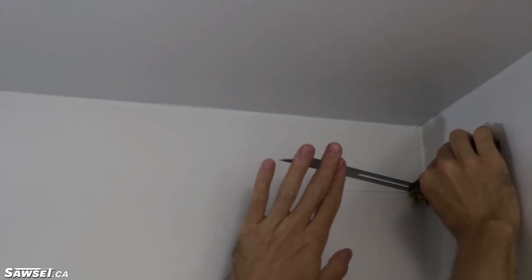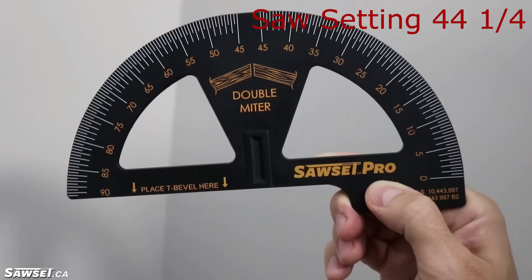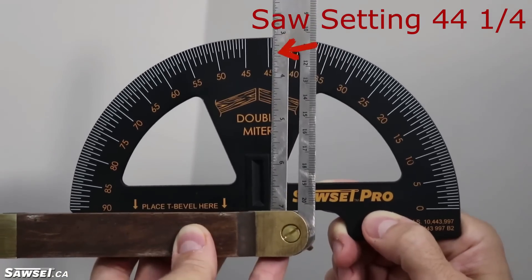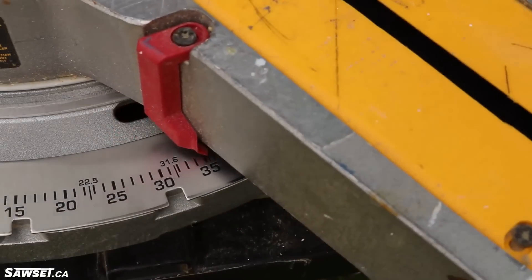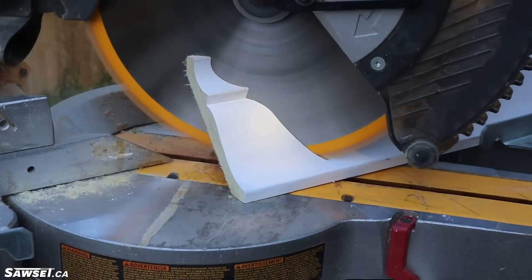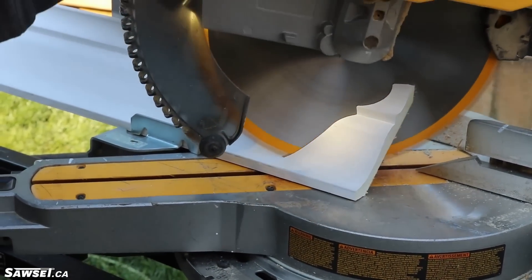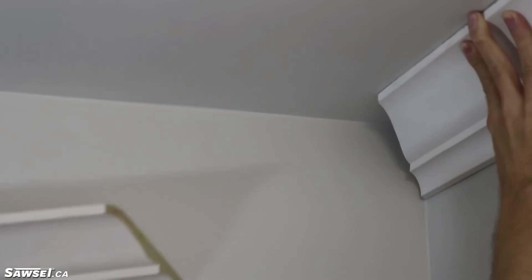With this simple to use tool and your T-bevel, it just takes two easy steps to find absolutely any saw settings for any angle. This durable ABS plastic protractor is perfect for both pros and DIYers alike. Sawset Pro eliminates guessing, mistakes, and waste. This saves you time and money.